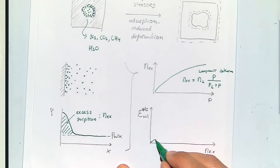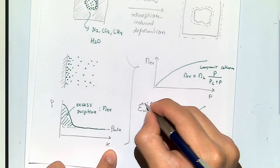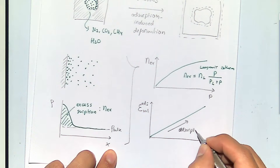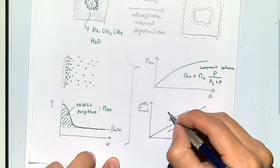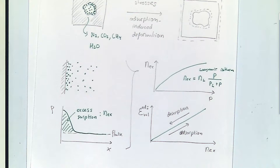The more sorption you have, the higher the volumetric strain. If you have absorption, your sample would swell; if you have desorption, your rock would shrink. Similar to temperature: if you increase the temperature, your rock swells; decrease the temperature, your rock shrinks.